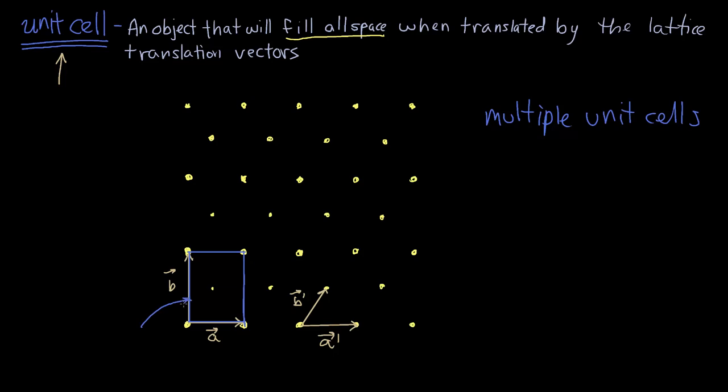So this cell we would call a centered rectangular cell. And if we use the lattice translation vectors, b and a, we can move this cell around to fill the entire lattice infinitely. And you can see how this can keep continuing.